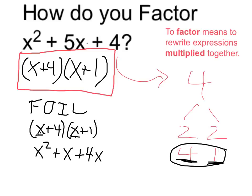And finally, our 4 times 1 is equal to 4. So we can see that these two combine, and it is equal to x squared plus 5x plus 4.